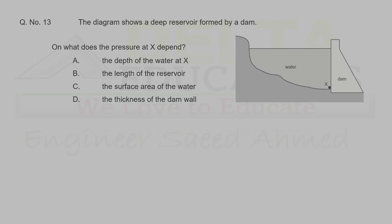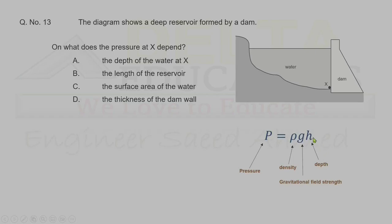Question 13. A deep reservoir is formed by a dam. On what does the pressure at point X depend? Pressure in a liquid is given by P = ρgh, where h is the depth. The pressure depends on the depth of water at X. Correct option is A.